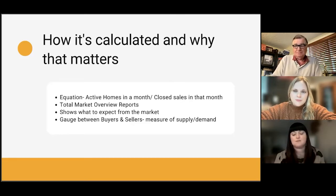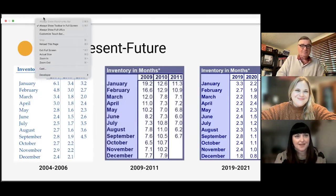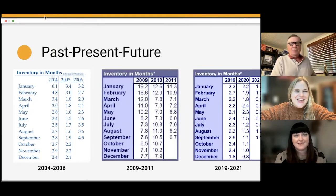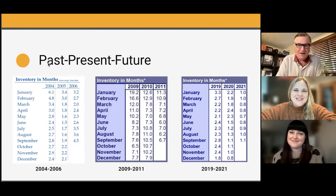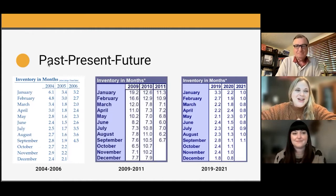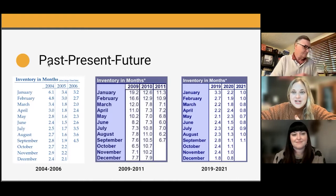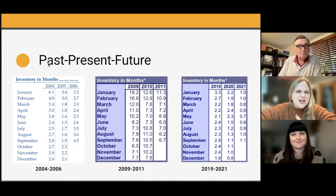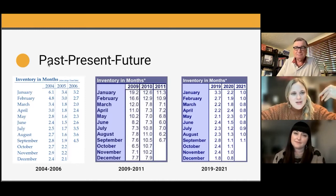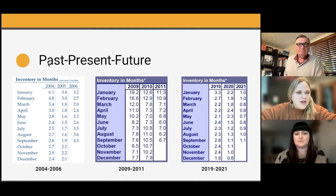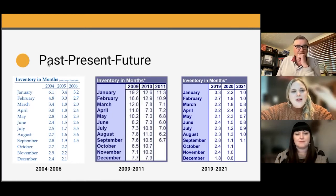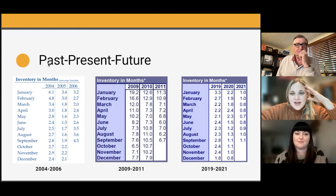Look at January 2009 — there is no way I could fit 19 stickers on this board. Imagine the choices a buyer would have had at that time! John and I remember that period — I got into real estate in 2007. We had some weird inconsistencies in the bubble: at the beginning of the year we were at 3.4 months inventory, then down to 1.5, then we went from 4.5 in 2006 all the way to 19.2 months in 2009. Such a completely different market.